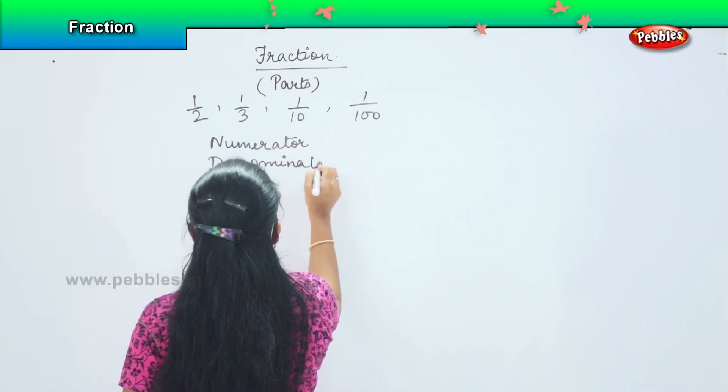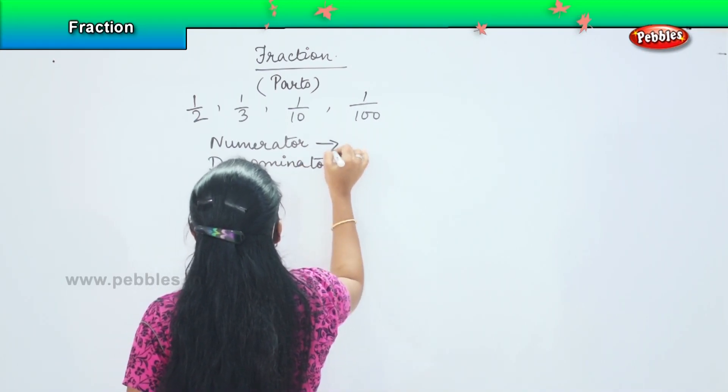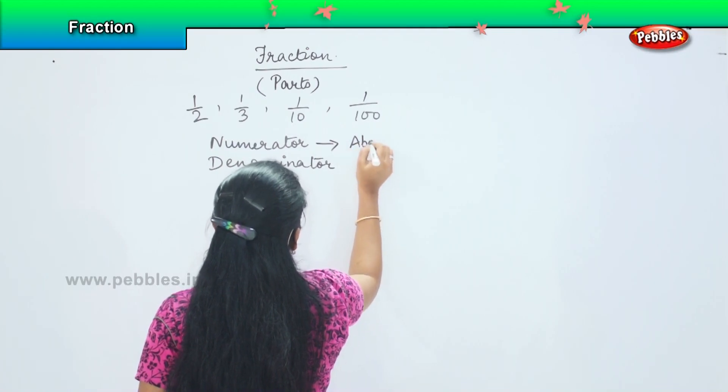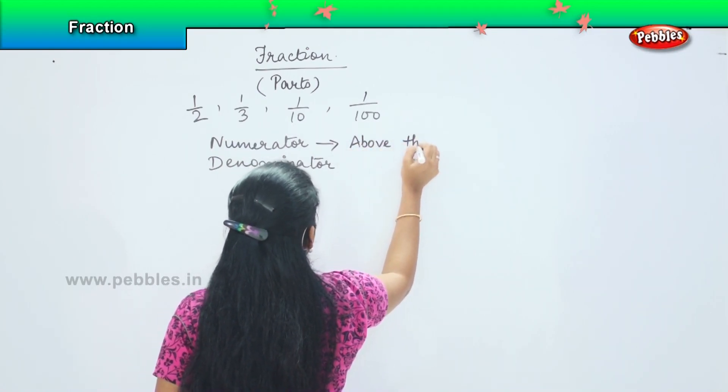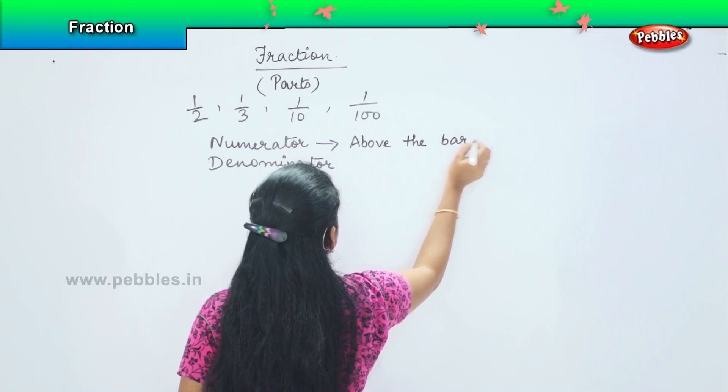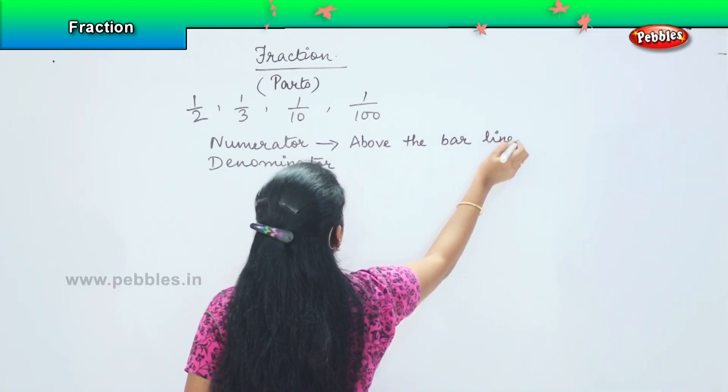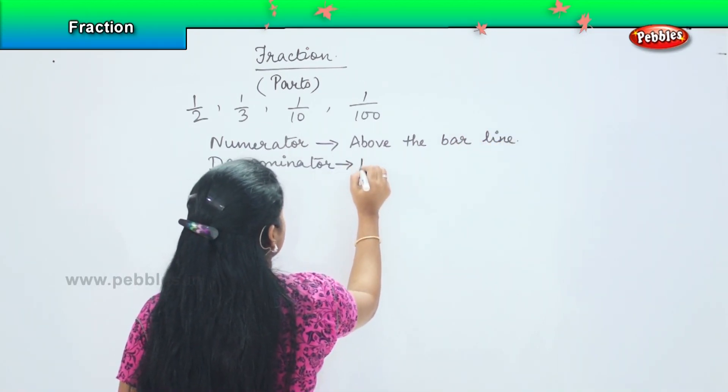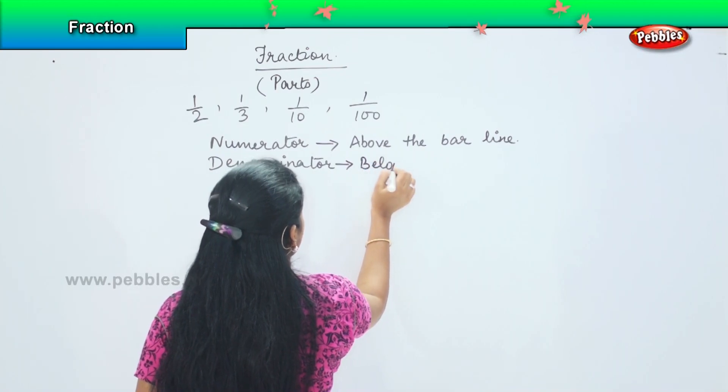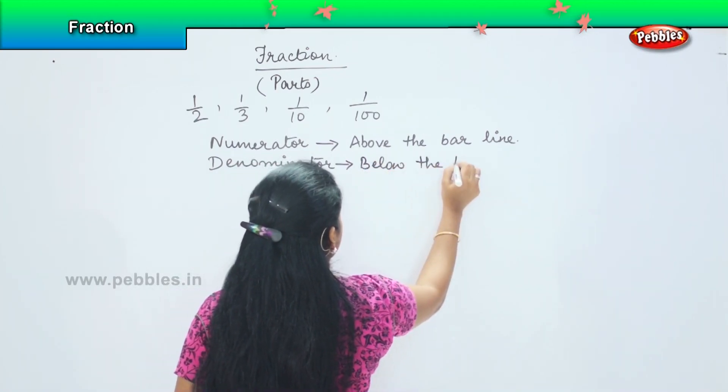Numerator is something which is above the bar line, and denominator is something which is below the bar line.